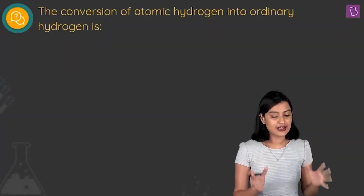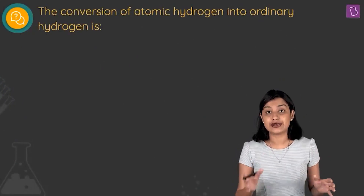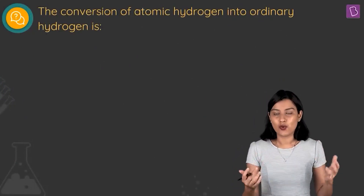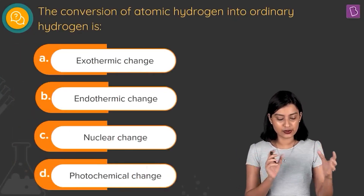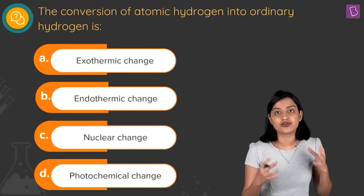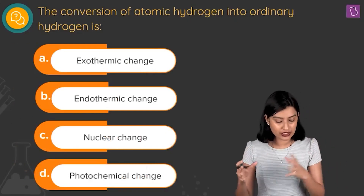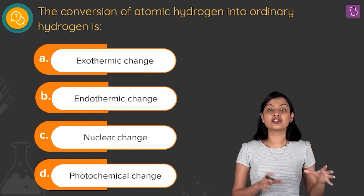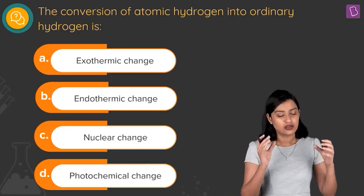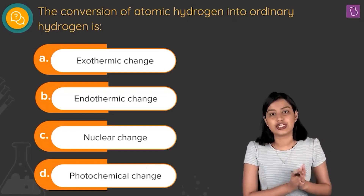Let's take a look at this question: the conversion of atomic hydrogen into ordinary hydrogen is what? The options are talking about the nature of this change — is it going to be an exothermic change, an endothermic change, a nuclear change, or a photochemical change? These are the four changes we are considering.